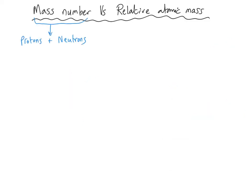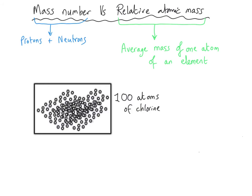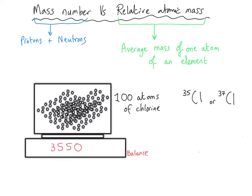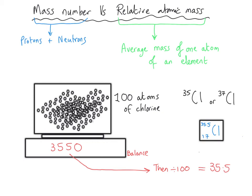Normally in the periodic table, the mass number and the relative atomic mass are the same number, whereas for chlorine and for copper they are slightly different — we see a decimal value. The mass number is the number of protons plus the number of neutrons added together, whereas the relative atomic mass is the average mass of an atom of a particular element. The best way to visualize that is to imagine that we had a box with 100 atoms of a particular element. For chlorine, which has two isotopes 35 and 37, we could weigh the atoms and find the average by adding up all their masses and dividing by 100, and we get a value of 35.5 — the average mass of a chlorine atom. The average mass of a copper atom is 63.5.